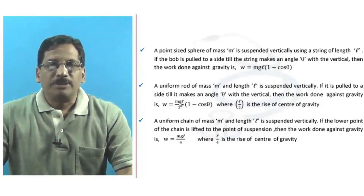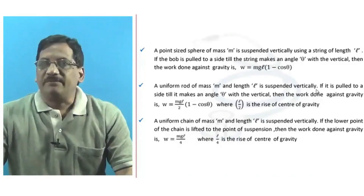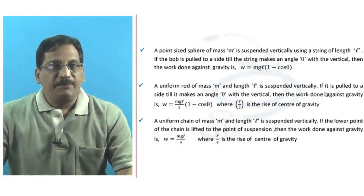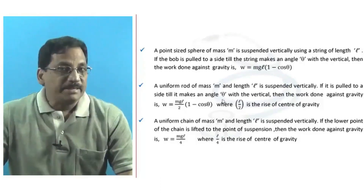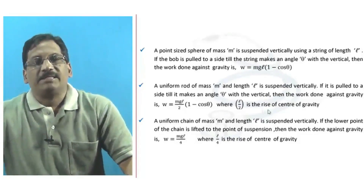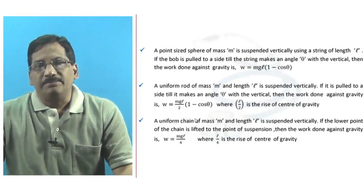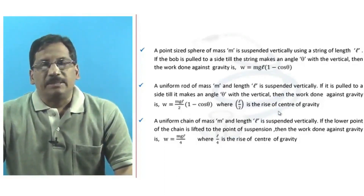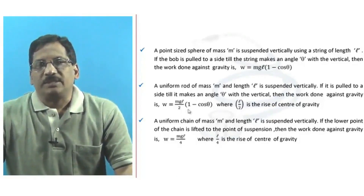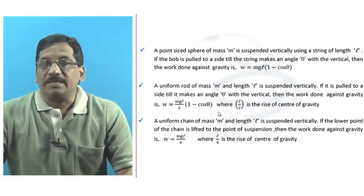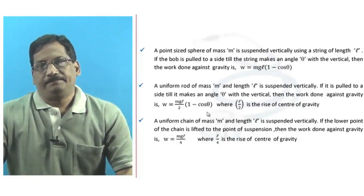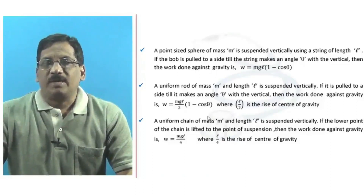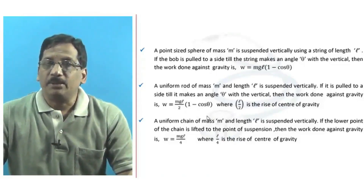Instead of a bob, suppose a uniform rod of mass m and length l is suspended vertically. If it is pulled to a side until it makes an angle theta with the vertical, the work done against gravity is W = mg × (l/2) × (1 − cos theta), where l/2 × (1 − cos theta) altogether represents the rise of the center of gravity.